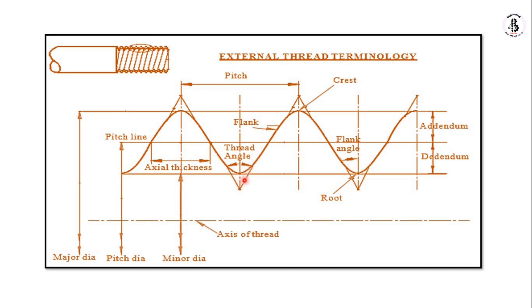The thread angle depends on the form of the thread. For metric threads it is 60 degrees, and for Whitworth threads it is 55 degrees. The crest is the outermost surface of the thread — the outer-to-outer shape. The root is the innermost part, corresponding to the minimum diameter. The crest is the last point of the major diameter, and the root is the end point of the minor diameter.